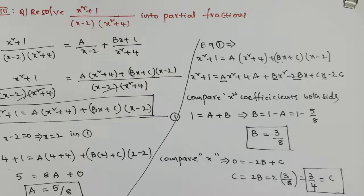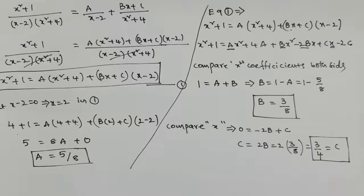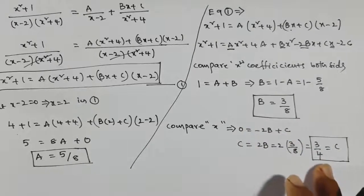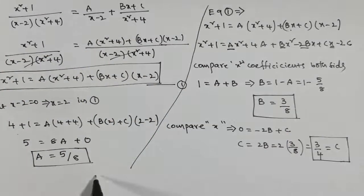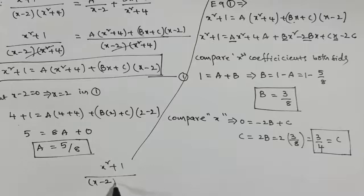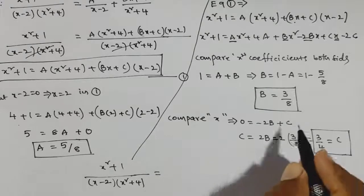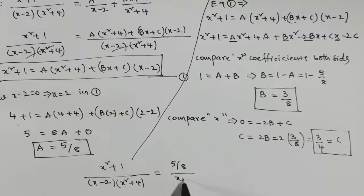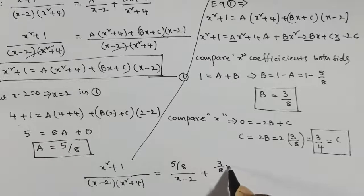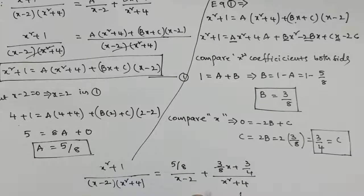Both values have now been determined: A = 5/8, B = 3/8, and C = 3/4. Substituting into the standard form: (x² + 1) / [(x − 2)(x² + 4)] = (5/8)/(x − 2) + (3x/8 + 3/4)/(x² + 4). This is the partial fraction decomposition of the given rational fraction. In this way, we can find the partial fractions of any given rational fraction.